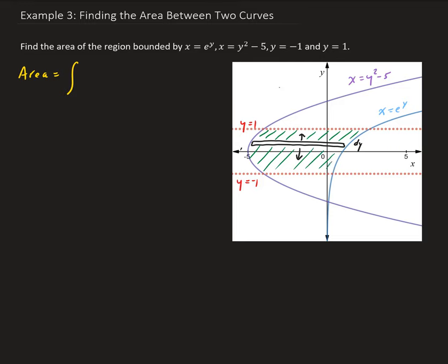So the integral is going to go from c to d, where c is minus 1, d is 1. And we have right minus left, so it's going to be f of y minus g of y.